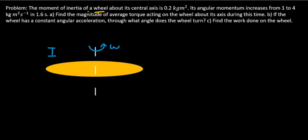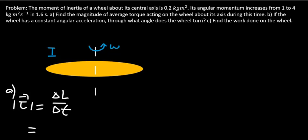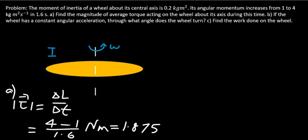Problem 3: The moment of inertia of a wheel about its central axis is 0.2 kg·m². Its angular momentum increases from 1 to 4 kg·m²/s in 1.6 seconds. The magnitude of the average torque is the change in angular momentum over the time interval: (4 - 1) / 1.6 = 1.875 N·m.